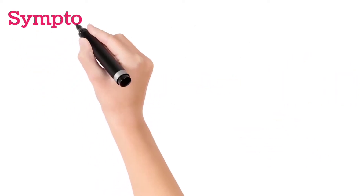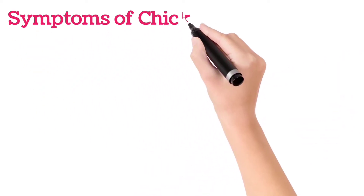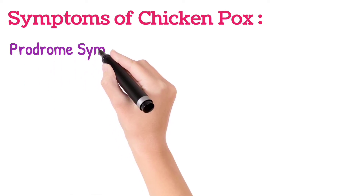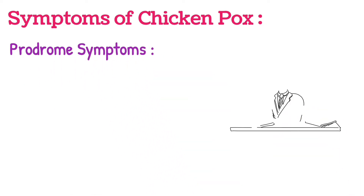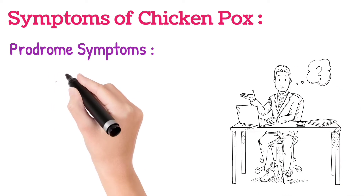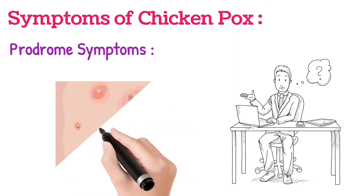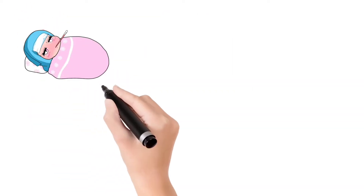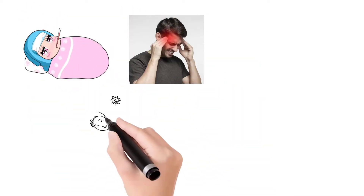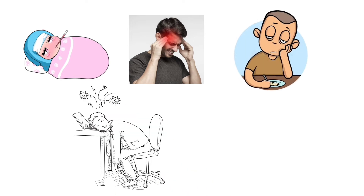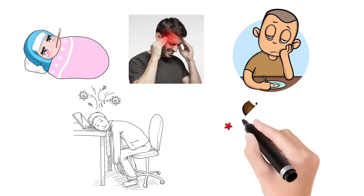Coming to the symptoms of chickenpox, first we should know about the prodrome symptoms. That means before the appearance of vesicles, there are certain symptoms which include fever, headache, malaise, loss of appetite, and sore throat.